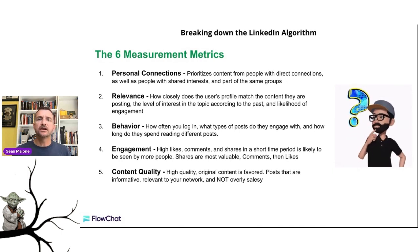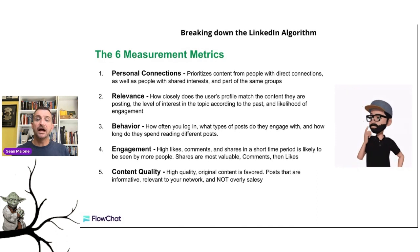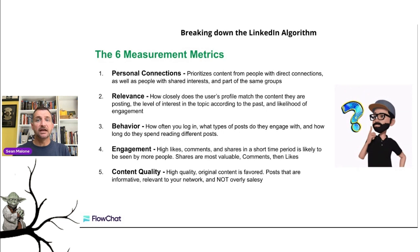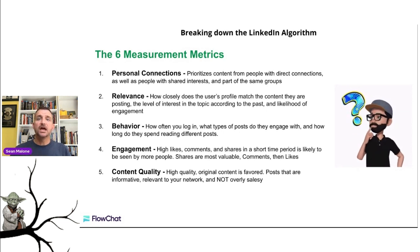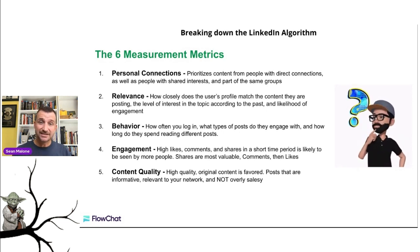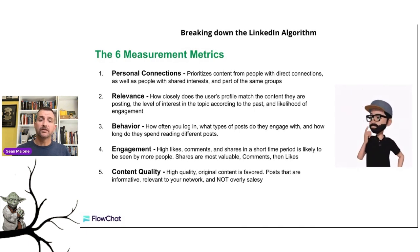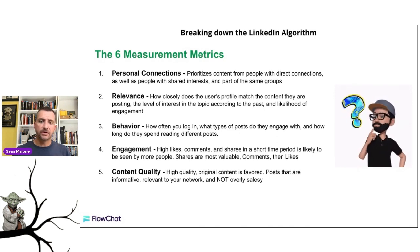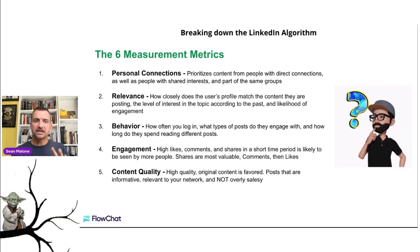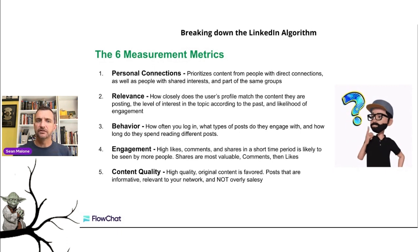Number five is content quality. It must be on point and relevant. High-quality original content is favored — don't rip off other people's content, though you can take other people's ideas and put your own spin on it. Posts should be informative, relevant to your network, and not overly salesy. Those three things — informative, relevant, and not overly salesy — are the secret when making content to spike the algorithm in your favor.